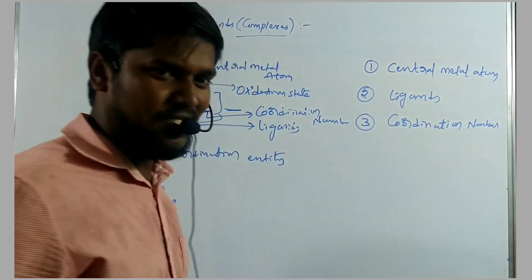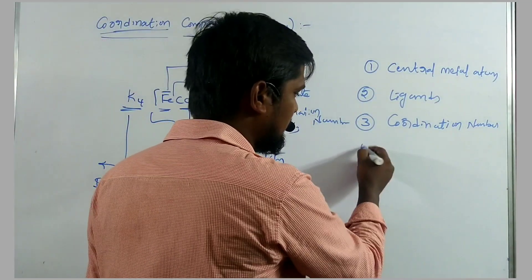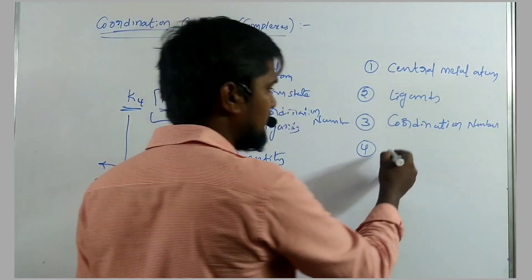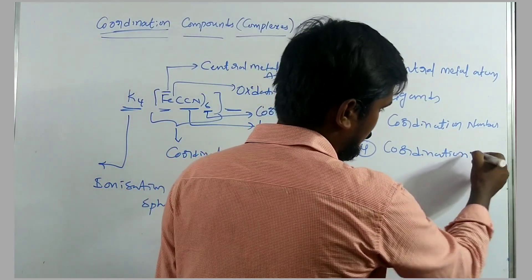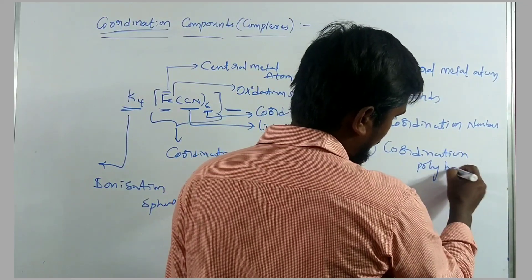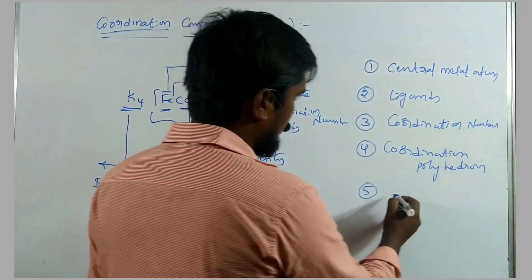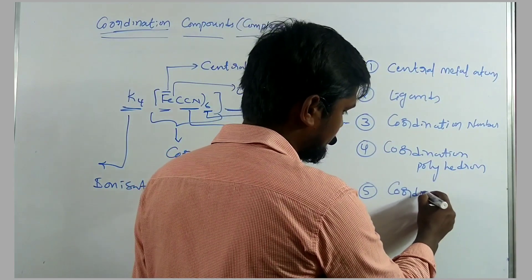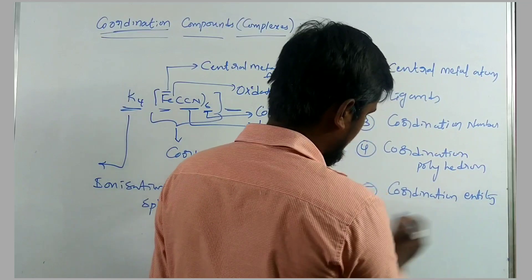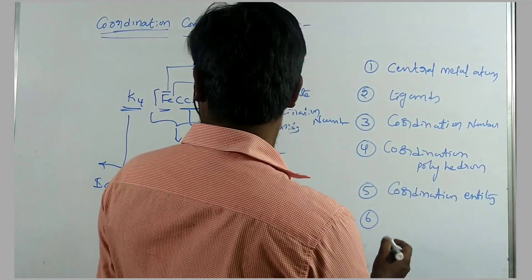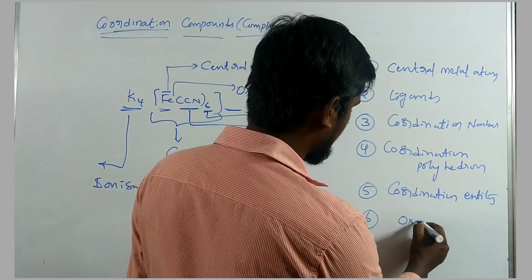Based on the coordination number, we will discuss the coordination polyhedron. Coordination polyhedron is nothing but the shape of the complex. The fifth term is coordination entity, and the sixth term is oxidation state.